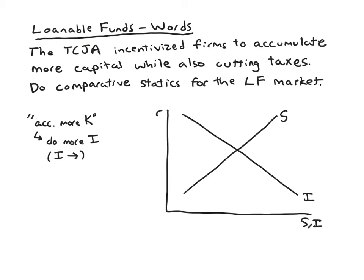It said firms to accumulate more capital while also cutting taxes. So this bill cut taxes, which means T went down. Cut taxes is code for T going down. And then if T goes down, we think back to the previous slide, public saving T minus G is part of overall saving. And if public saving here decreased because T went down, it's just like on the previous slide, we're going to have S shifting to the left.